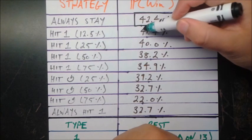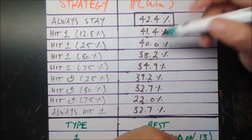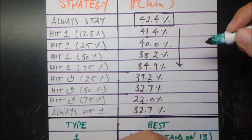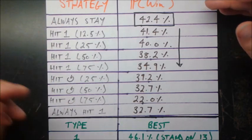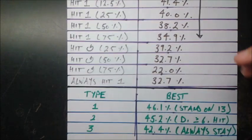The general trend you see here is we have 41.4, 40. This is just dropping all the way down here. So the more chances we have to hit, the more likely we are to hit one card, the less likely we are to win in the end.